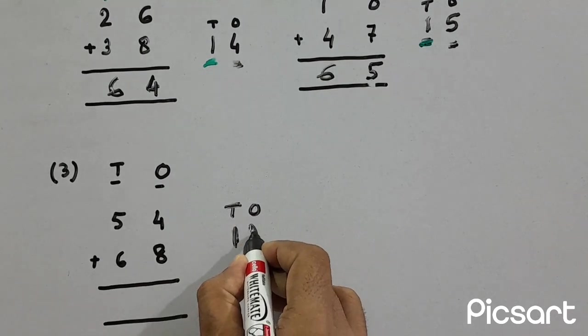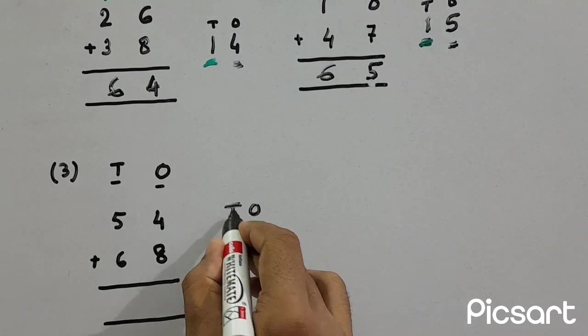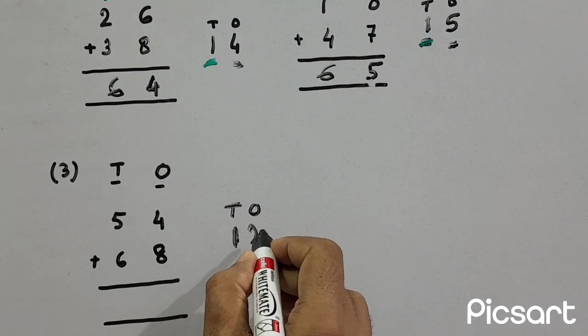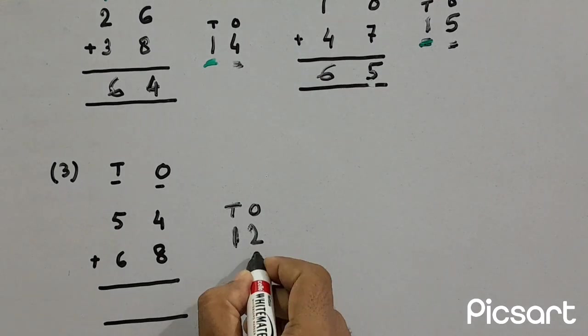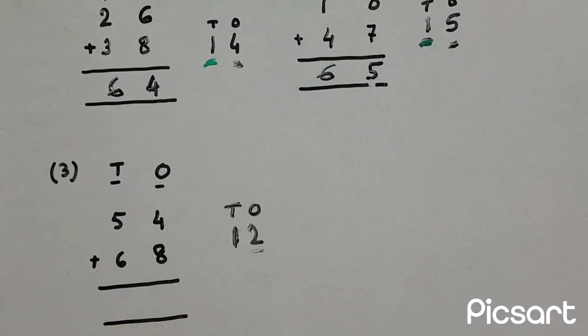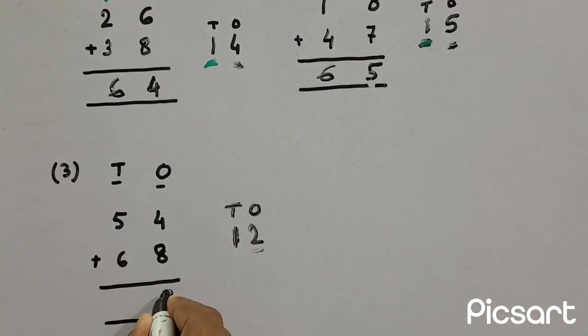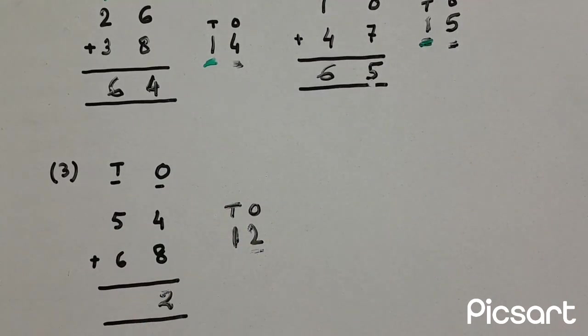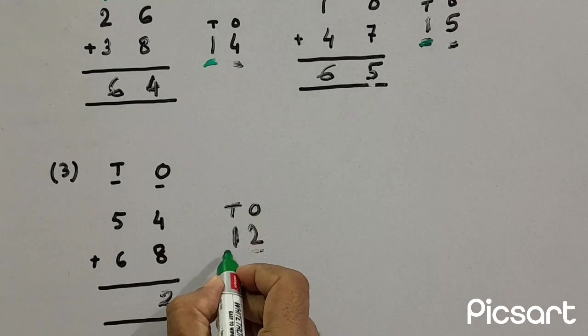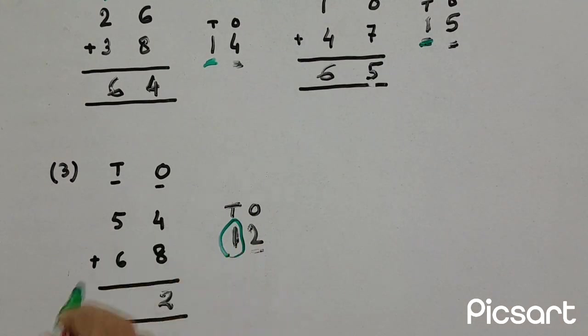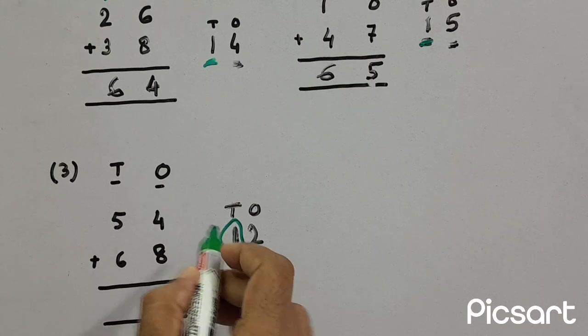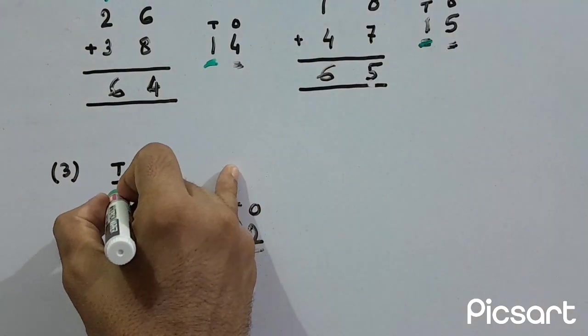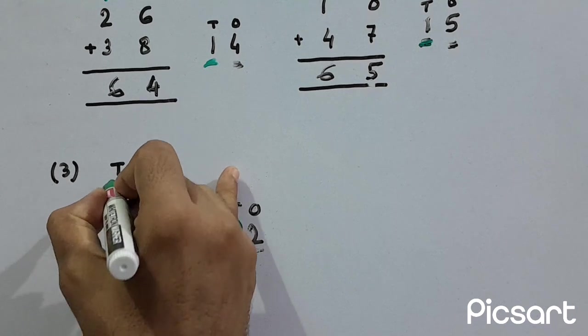So twelve is actually one ten plus two ones. So this two will put in ones column. Here, two. And this one, one ten, will write under tens column. So here we'll write one.